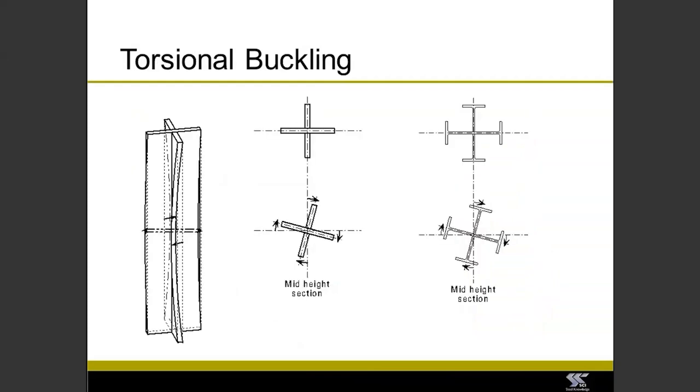Torsional buckling is easier to think about when we've got a cross section that is much more in a cross type shape, but it's not always just for these types of members. These are just shown for ease of explanation.